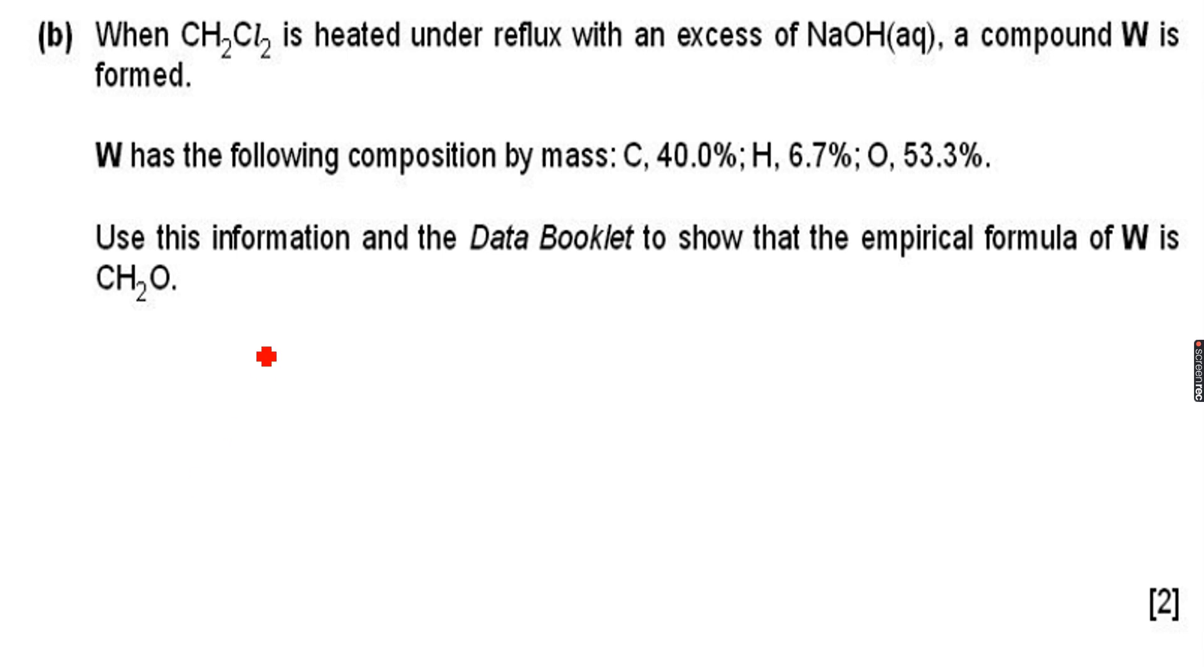When CH2Cl2, which is dichloromethane, is heated under reflux with an excess of NaOH aqueous, a compound W is formed. W has the following composition by mass: C 40%, H 6.7%, and O 53.3%. Use this information and the data booklet to show that the empirical formula of W is CH2O. So we have to prove that this is the empirical formula.